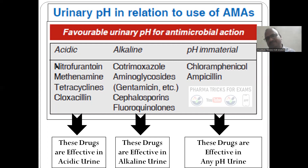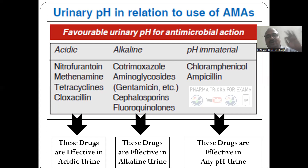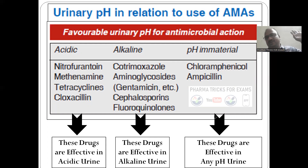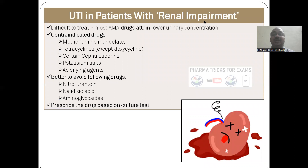pH of the urine is an important consideration. Some drugs like nitrofurantoin and tetracyclines are very effective in acidic urine. Other drugs are very effective in alkaline urine. Chloramphenicol and ampicillin are effective in either acidic or alkaline urine — pH is immaterial for them. These points are important to write correctly in the examination.